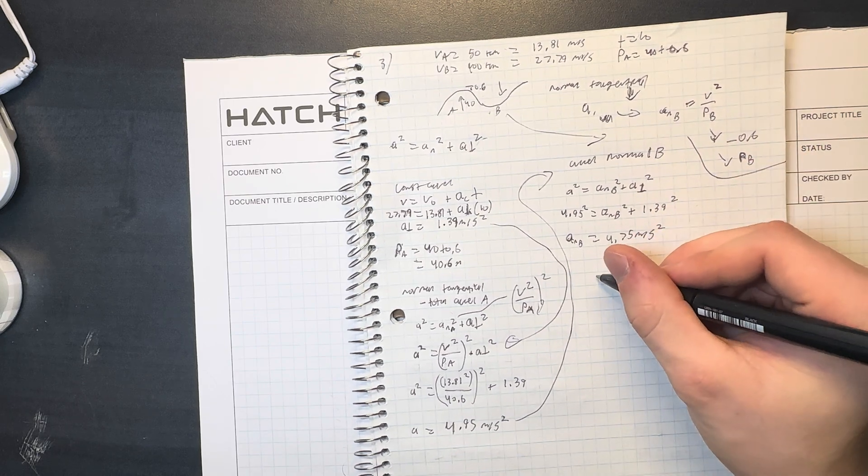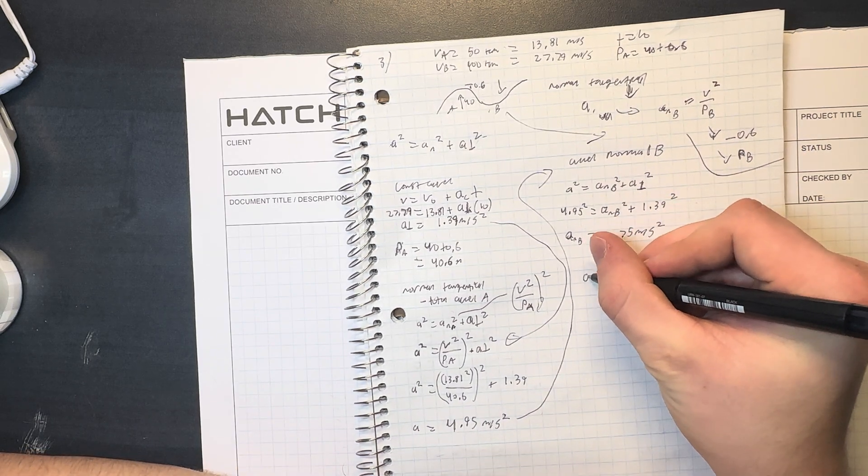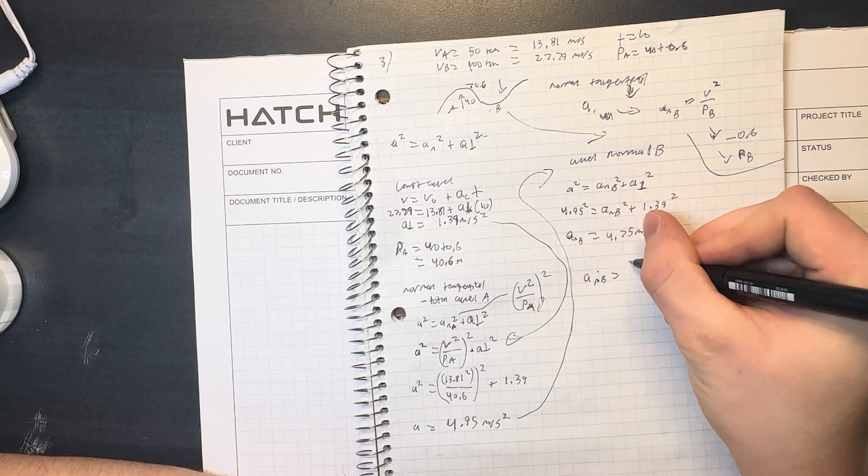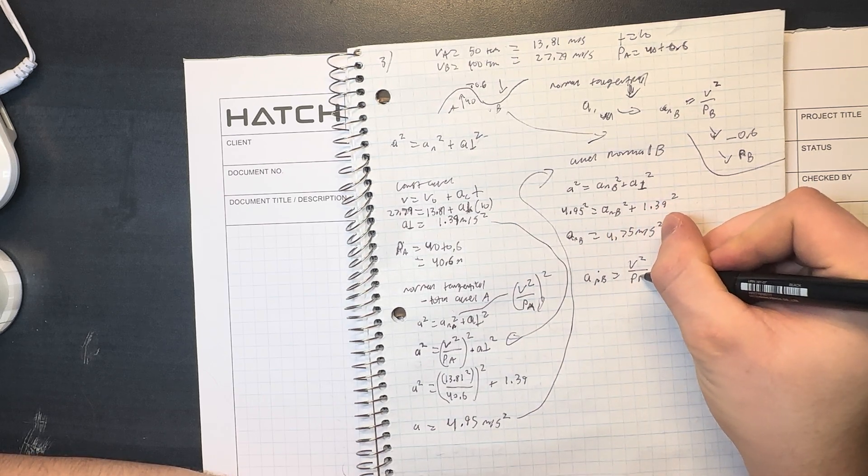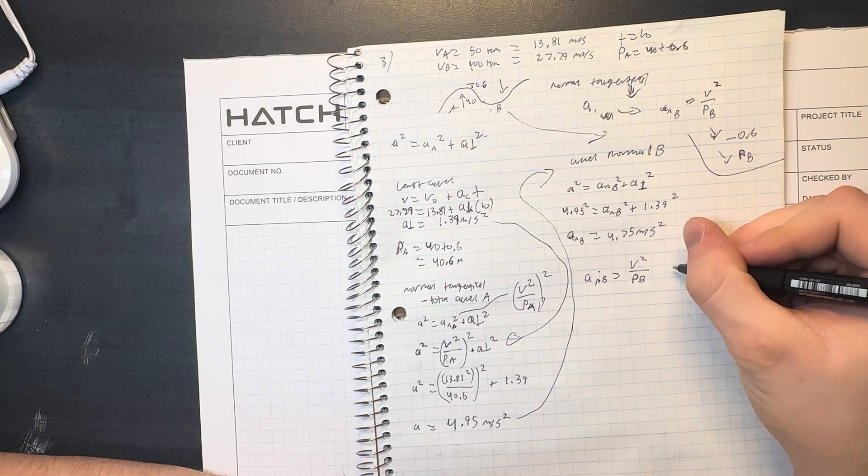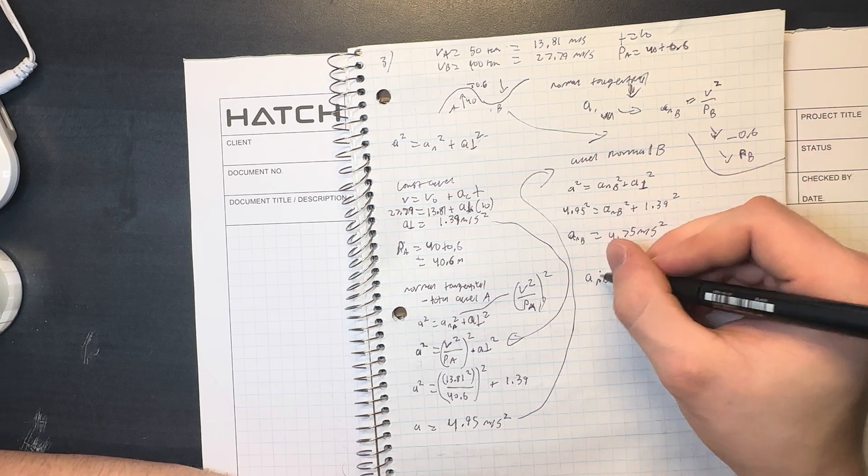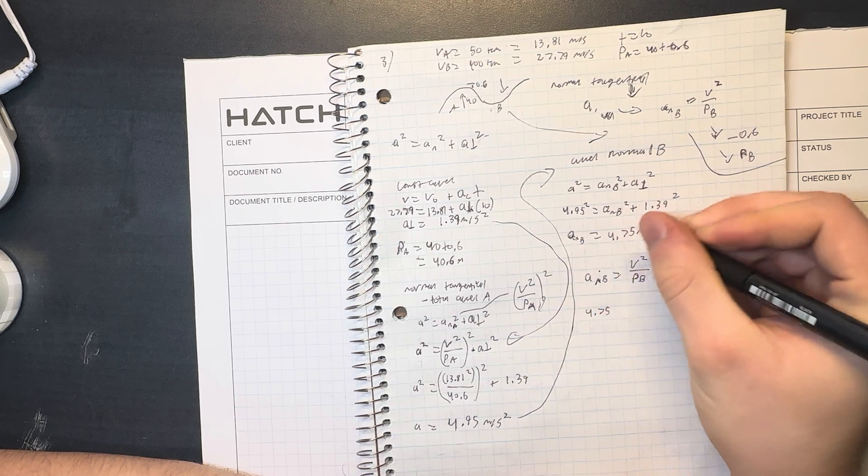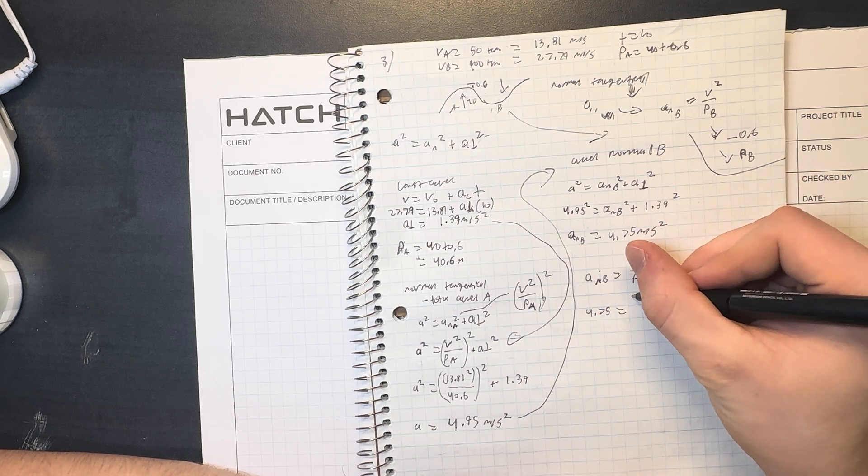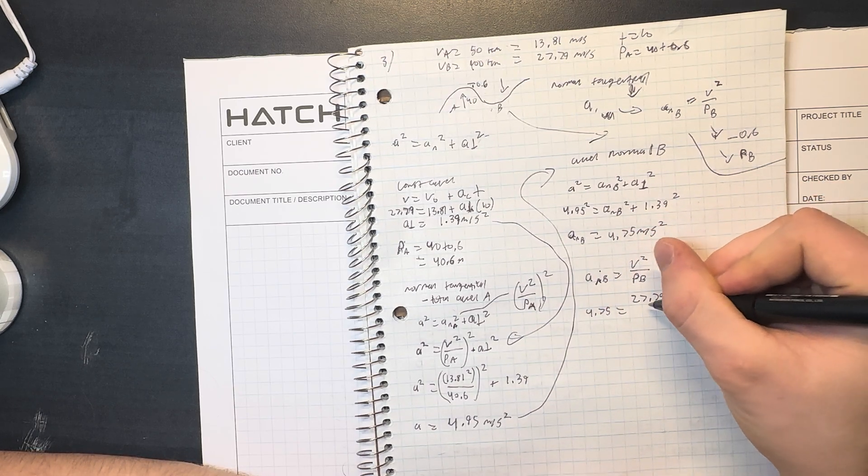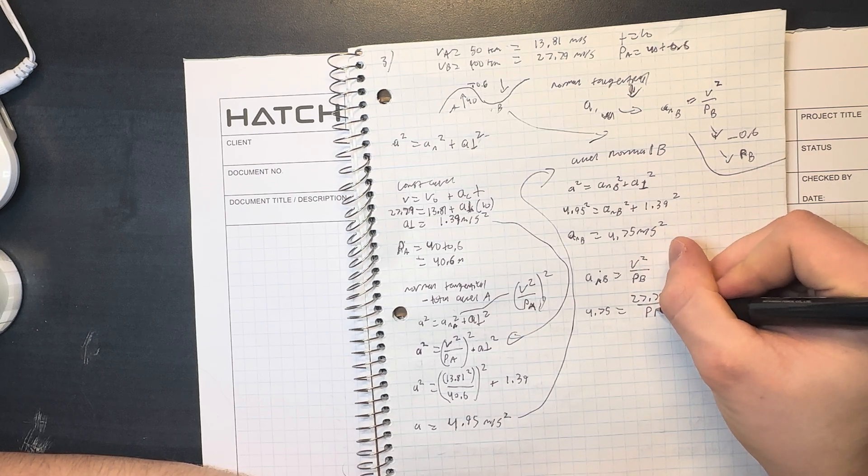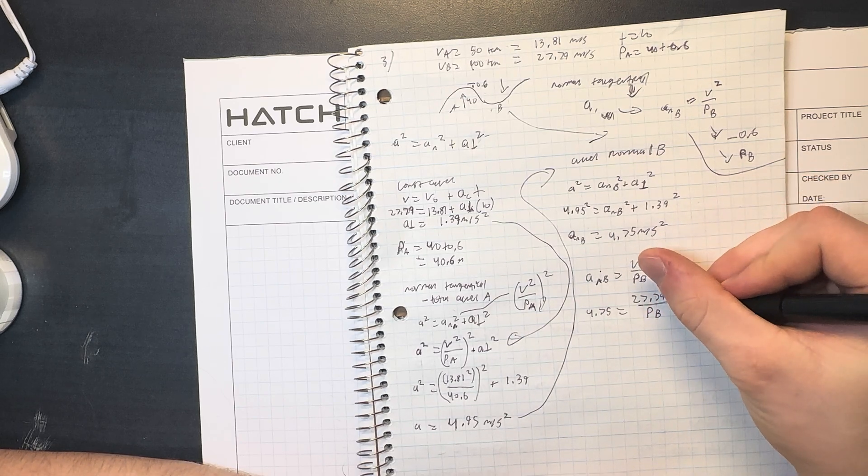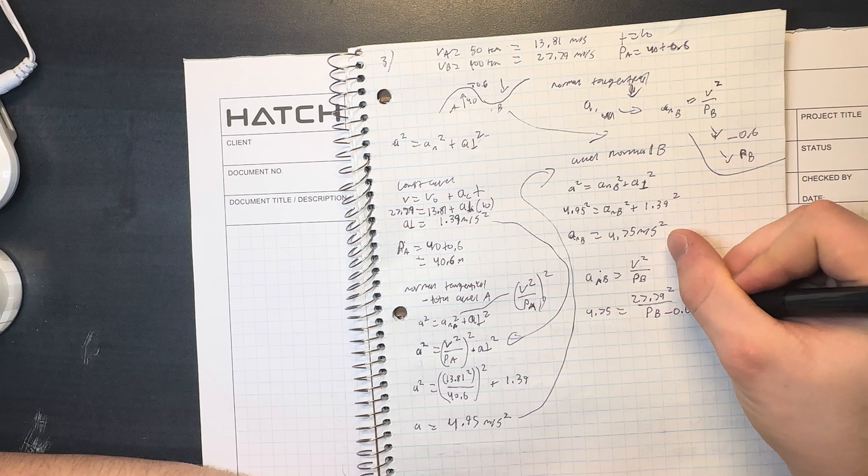Great, so now from here we can use that formula again. a_n_B equals v squared over radius of B, which is what we're solving for. So we know that 4.75 is equal to the final velocity was 27.79 squared over we don't know this radius, but we do know that you have to subtract 0.6 from it.